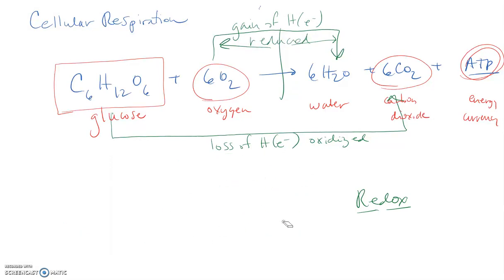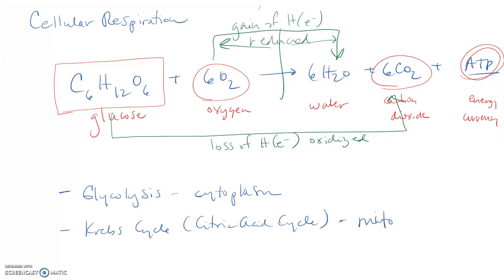Before we move on, I'll have a separate video for each of the main processes of cellular respiration. We're going to break this one reaction down into three different processes. The first is glycolysis, which occurs in the cytoplasm of the cell, not the mitochondria. The next is the Krebs cycle, sometimes called the citric acid cycle—these are the same thing. This occurs in the mitochondria.